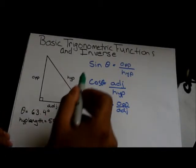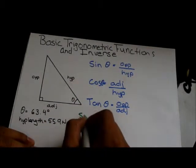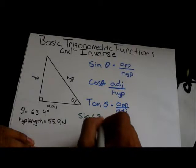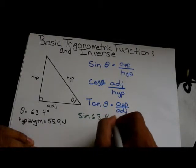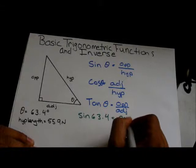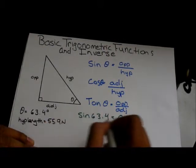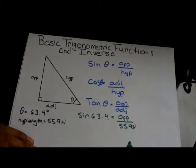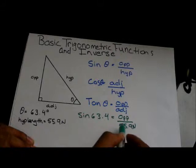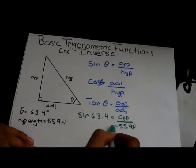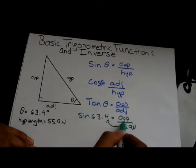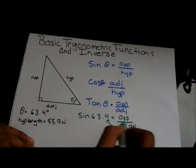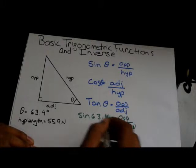So, let's just get to this. Our angle, sine 63.4 is equal to opposite, which is unknown, over our hypotenuse length, which is 55.9 newtons. So, how are we going to isolate for opposite? Well, we have to carry this number across the equal sign, and when you do that, it becomes a multiplication, since it's a divisor on this side.